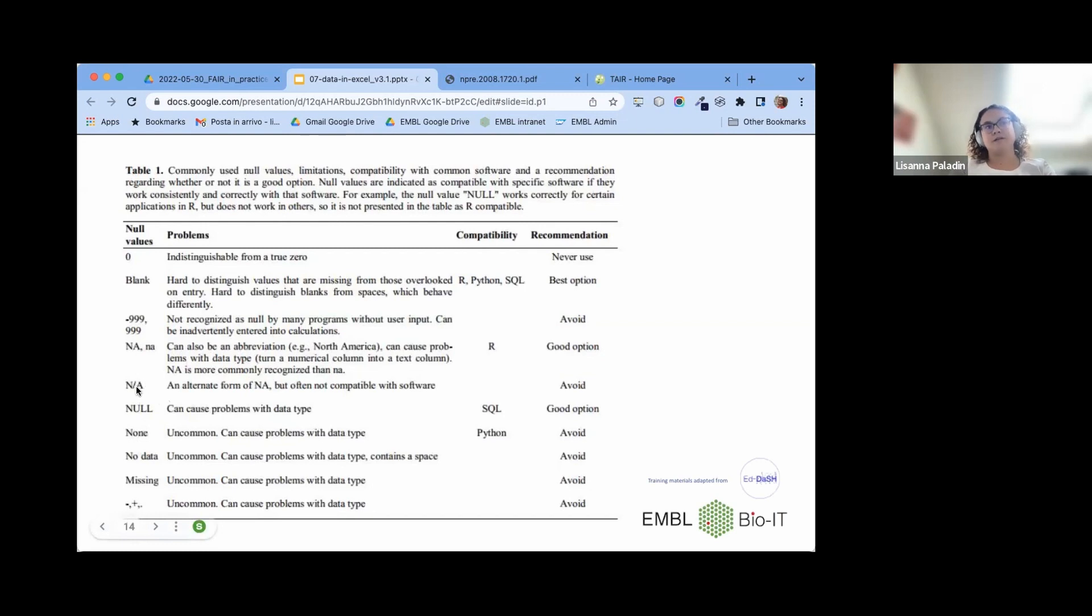N/A can be abbreviation of, for example, North America. So they can be used with some data types but maybe are not the best for other data types. N slash A is an alternative form that should be avoided because it's often not compatible with software. Null can cause problems with data type. None, no data, missing, and all the plus or minus are uncommon and can cause problems with data types and need to be avoided. Any reaction to this table? Usually there is.